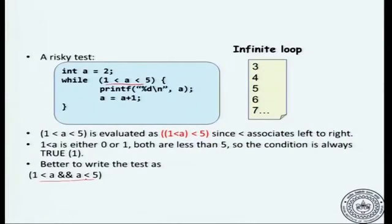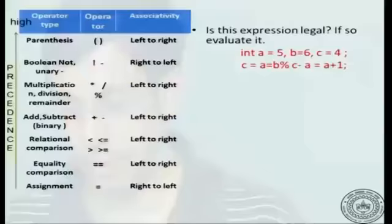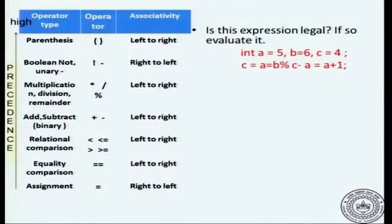Notice that this is different from the way we normally write in mathematics. The mathematical notation will cause an infinite loop in C because C applies the precedence and associativity rules, not what you think it should do. Now let us look at whether there can be expressions which make no sense. We have seen several examples where you can always make sense out of an expression.